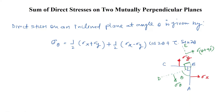Direct stress on an inclined plane at angle theta is given by sigma theta, which is equal to: 1/2 (sigma x plus sigma y) plus 1/2 (sigma x minus sigma y) cos 2 theta, plus tau sin 2 theta.